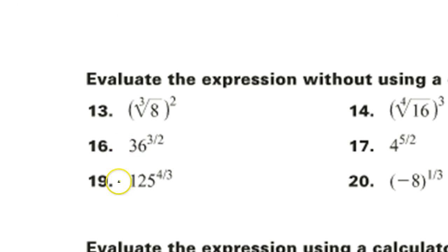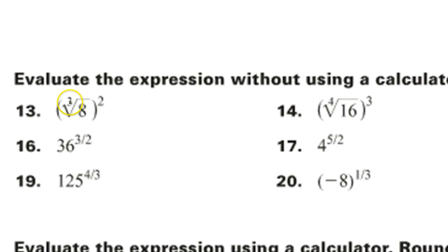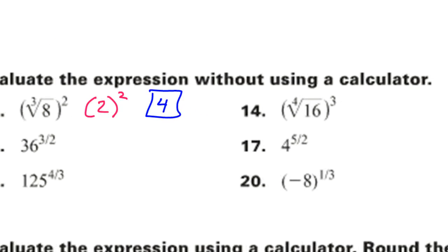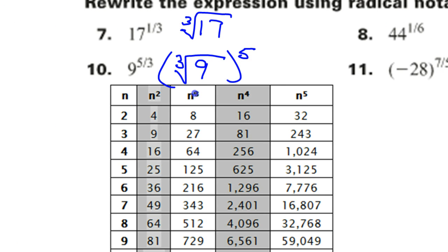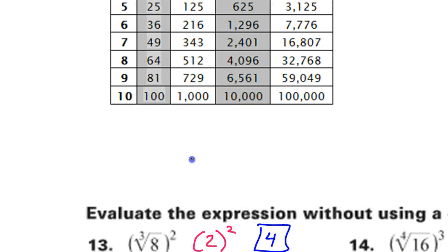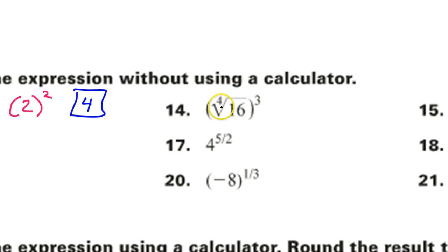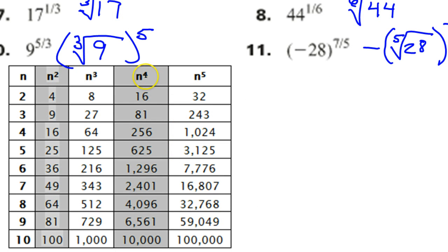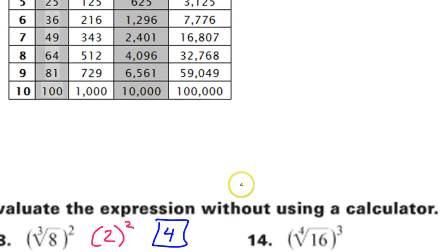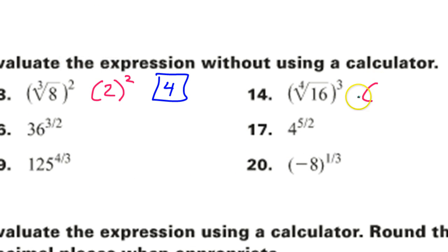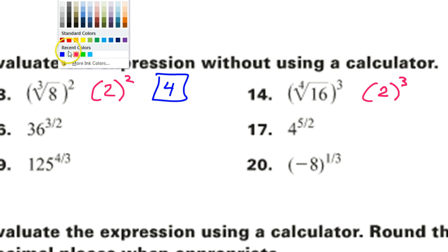Now we'll actually evaluate expressions without a calculator. The cube root of 8 is 2, so I've got 2 squared, which is 4. That's the answer to number 13. For number 14, the 4th root of 16 is 2. I can replace the inner part with 2, giving 2 to the 3rd power, which is 8.